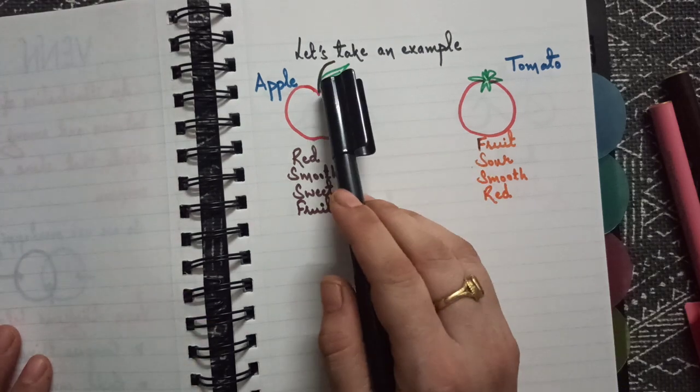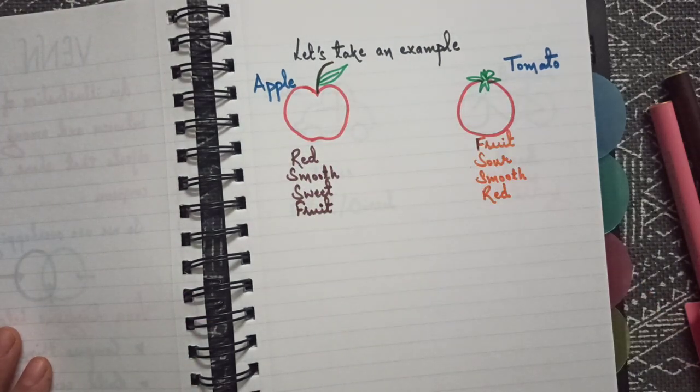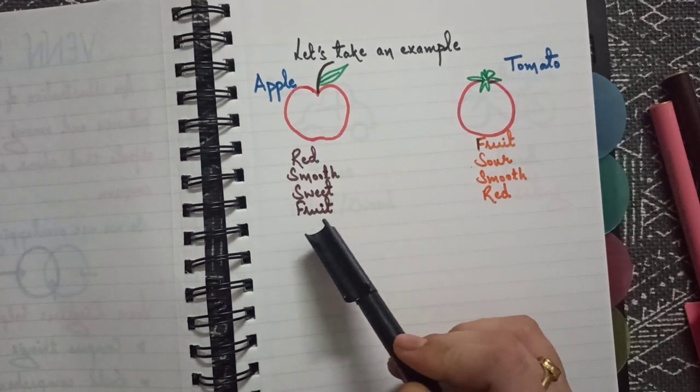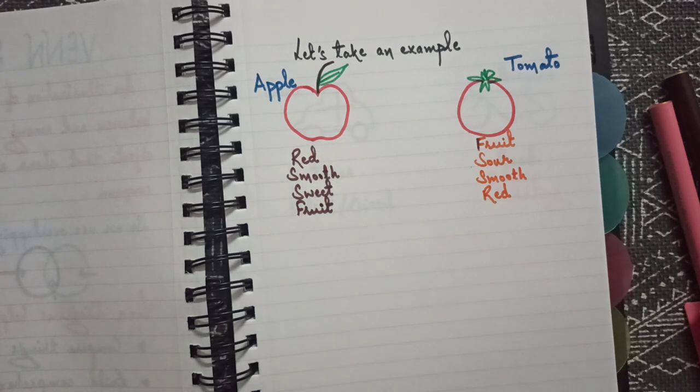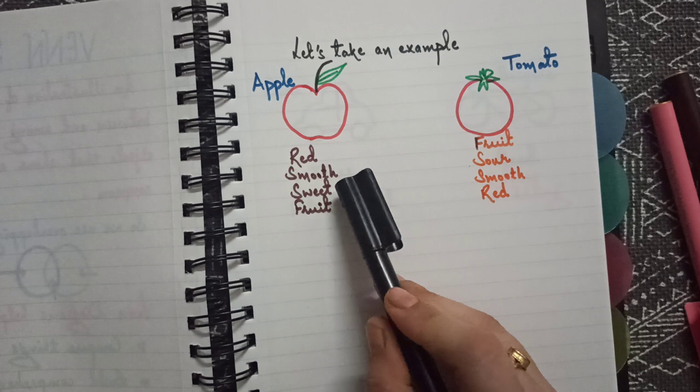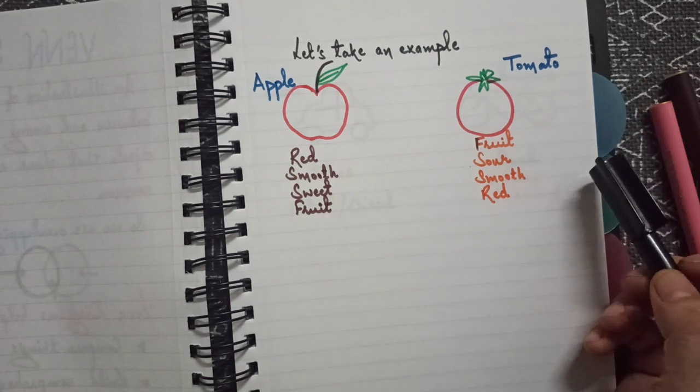Let's take an example of apple and tomato. Now look carefully, let us first list out what are the properties of apple. It is red in color, it is smooth, it is sweet, and it is a fruit.